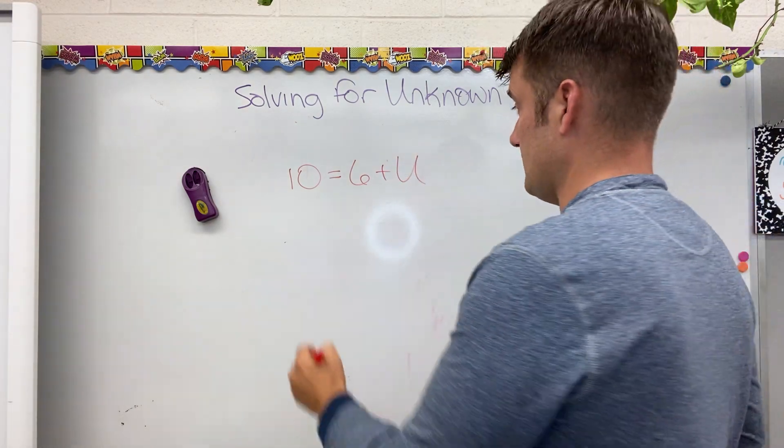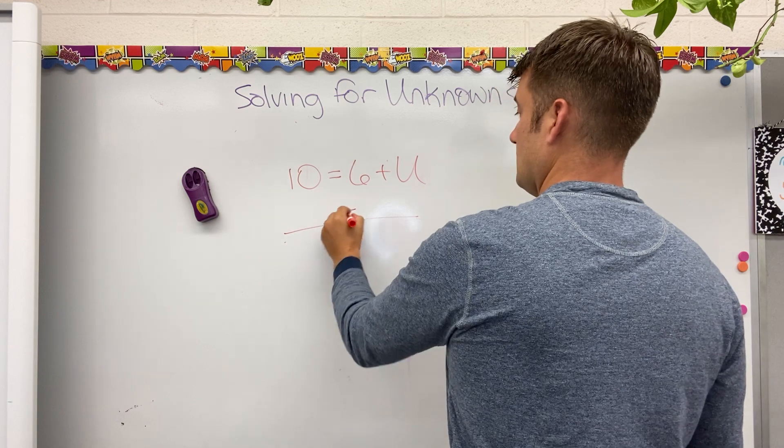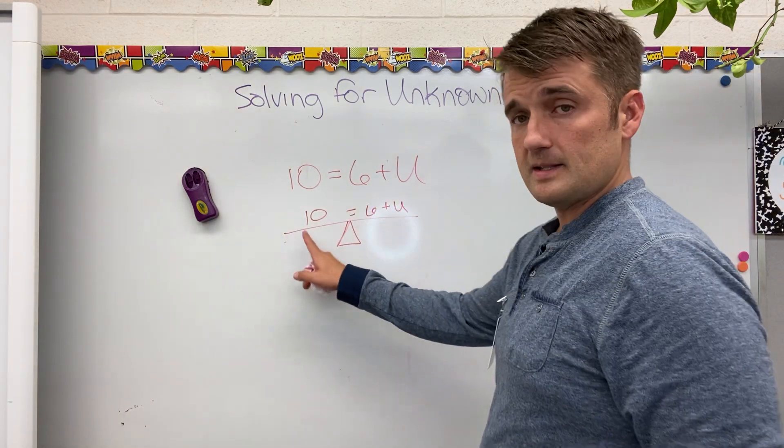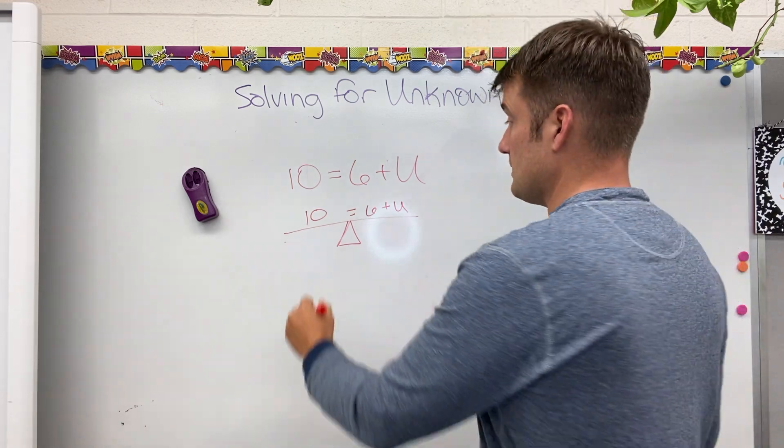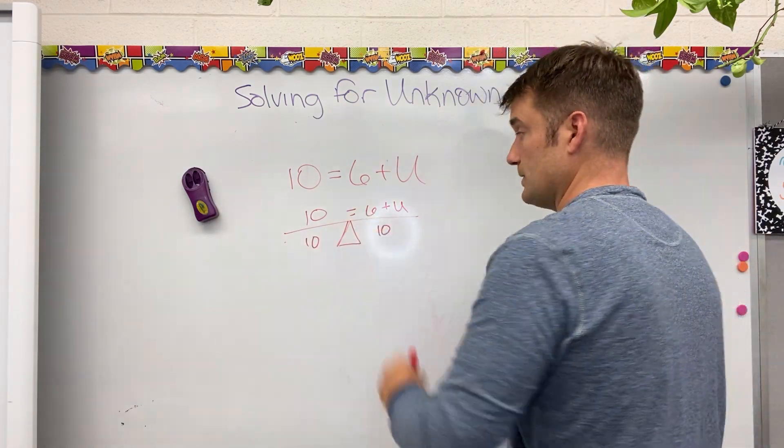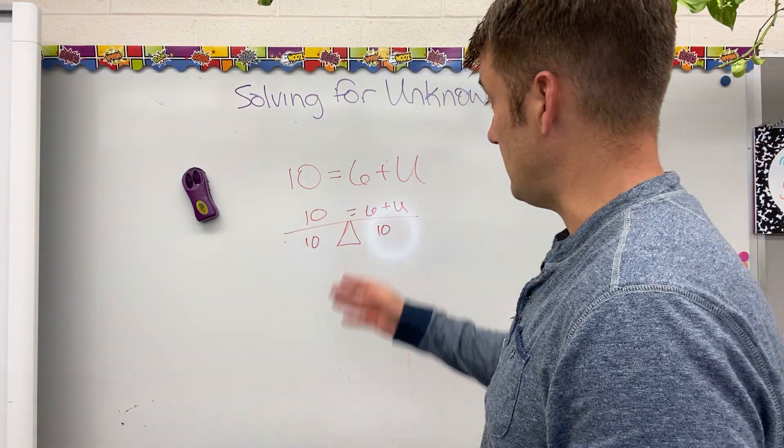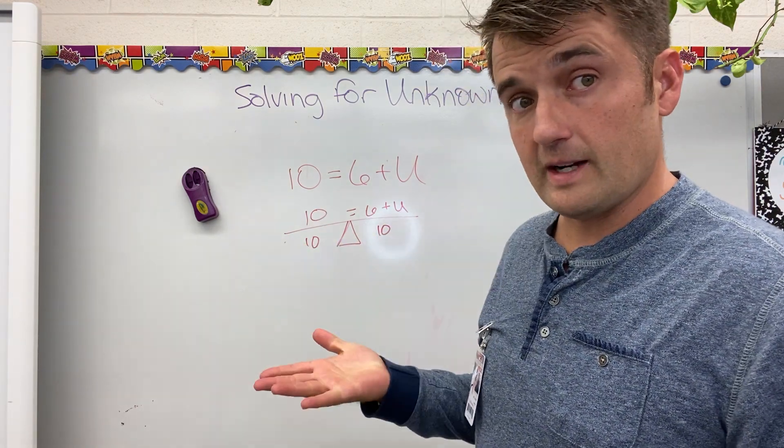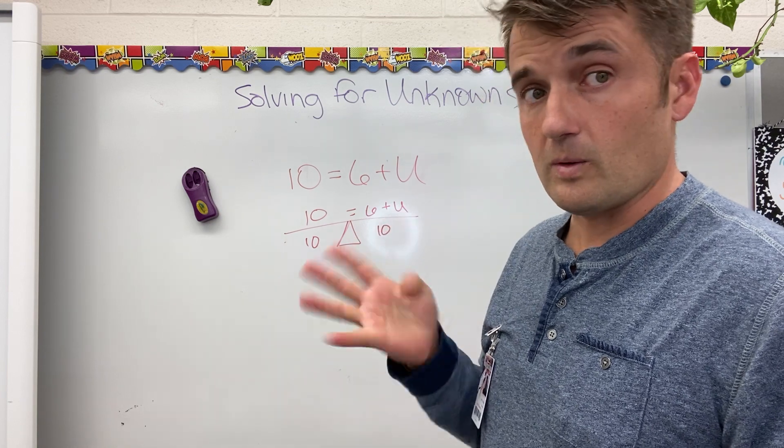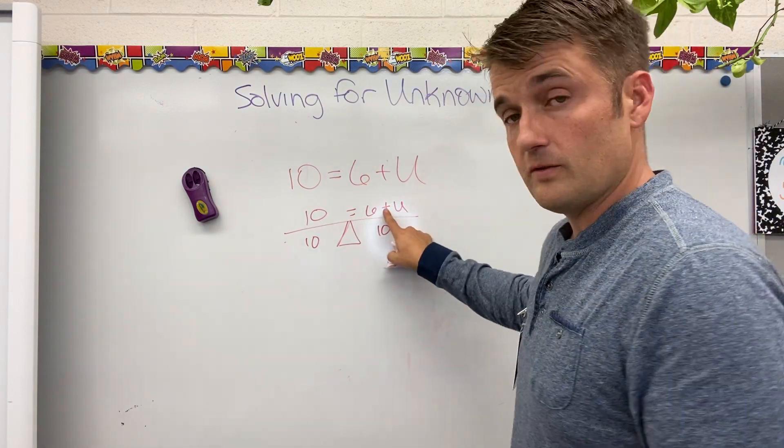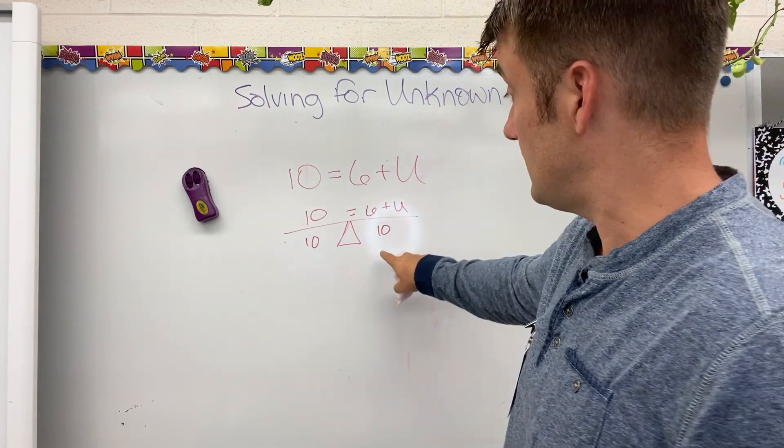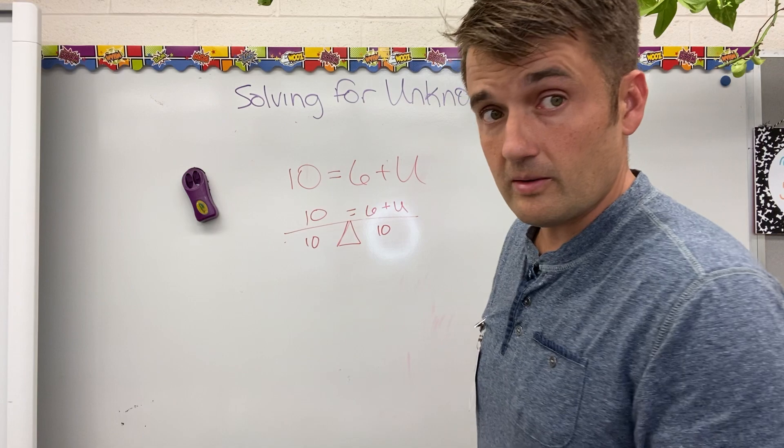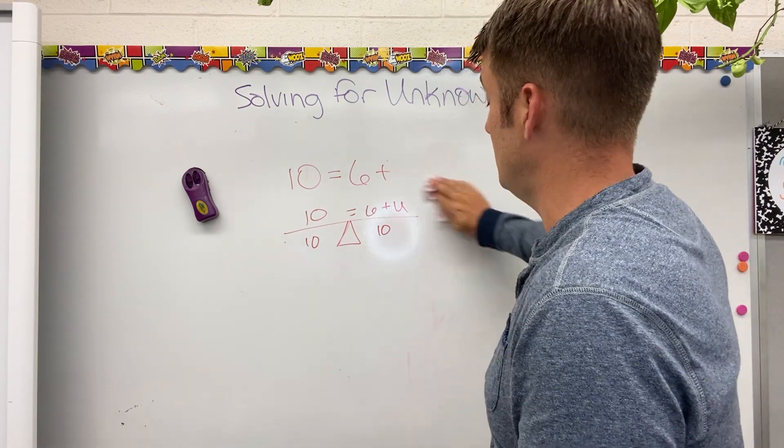I'll seesaw it first. 10 equals 6 plus U. 10 is all by itself. Both sides of my equation have to equal 10. 6 plus something equals 10. I can figure that out. 7, 8, 9, 10. It's 4. Or, I can use an inverse operation. The opposite of addition is subtraction. 10 minus 6 is 4. Either way I go, U is 4.